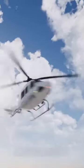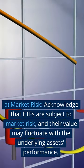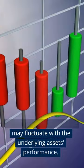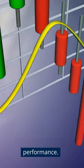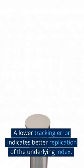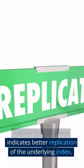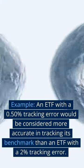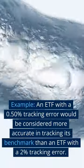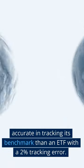5. Risk Management. A. Market Risk. Acknowledge that ETFs are subject to market risk, and their value may fluctuate with the underlying asset's performance. B. Tracking Error. Be aware of tracking errors, which occur when an ETF's performance deviates from its benchmark. A lower tracking error indicates better replication of the underlying index. Example: an ETF with a 0.50% tracking error would be considered more accurate in tracking its benchmark than an ETF with a 2% tracking error.